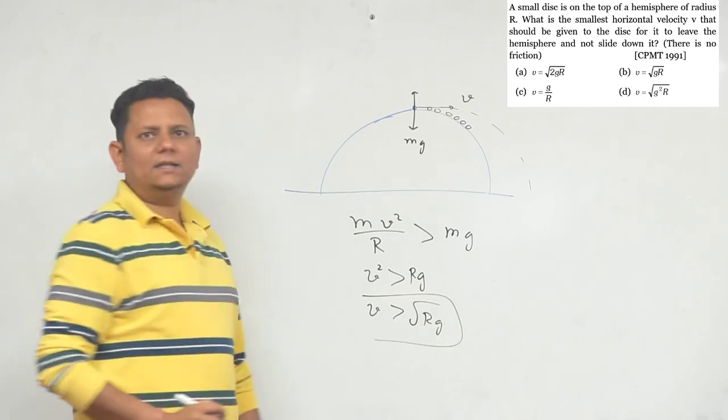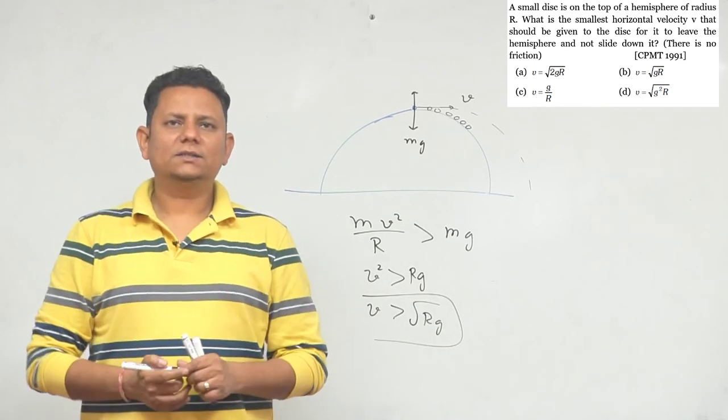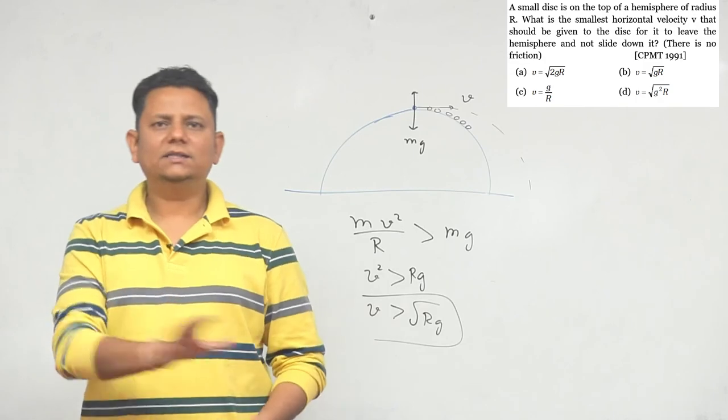which means option number b, v is equal to √(gr), is the correct choice.